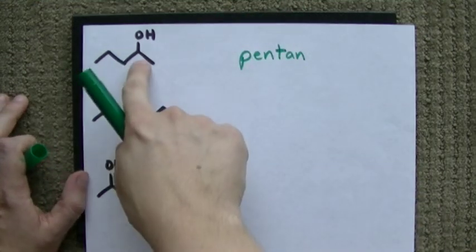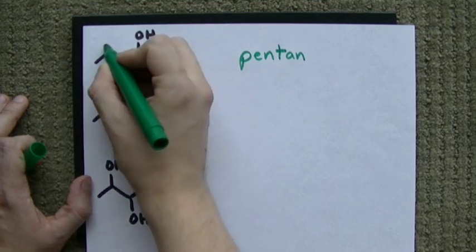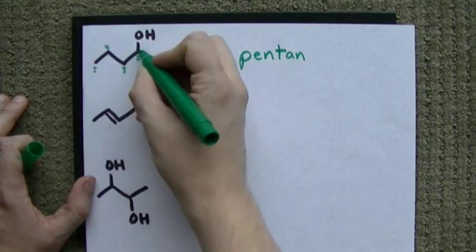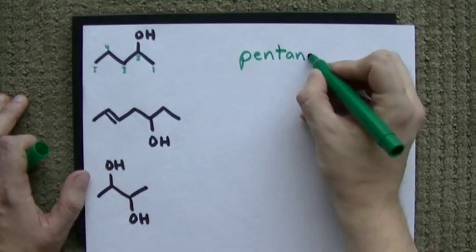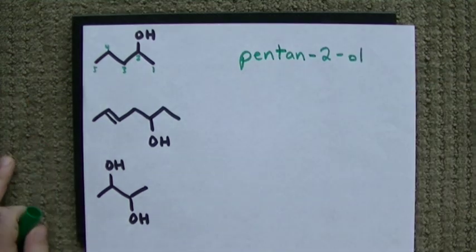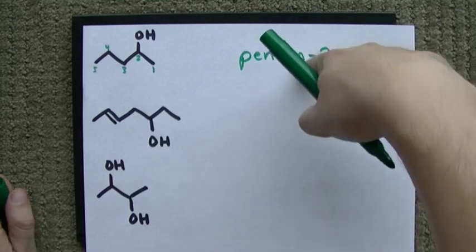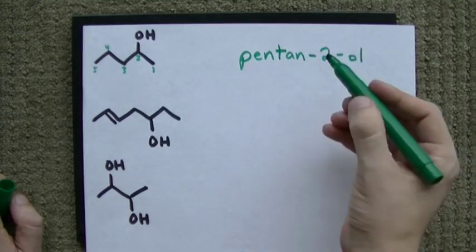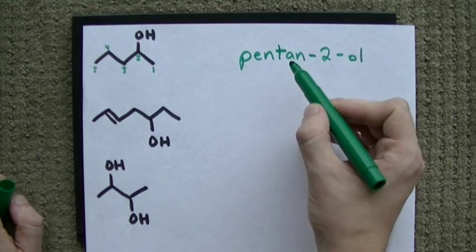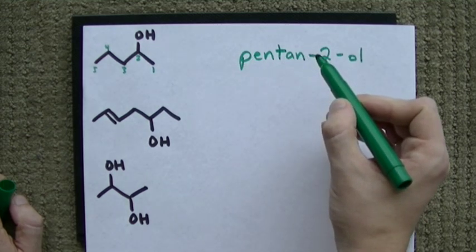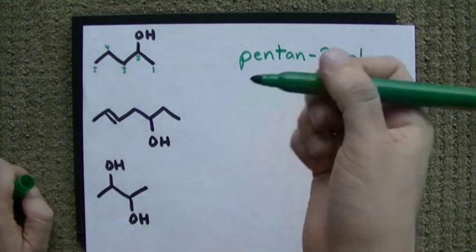We have an OH group though, on carbon number one, two, yeah, carbon two. If we'd have numbered these carbons from the other direction, it would have been carbon four, we want the lowest number. We call this pentane two all. Notice, pentane had the E removed. This is just one of those things that we do when we're sticking something on to the end. It's a five carbon chain, all single bonds, and on carbon number two, there's an OH group. Great! That was pretty easy.